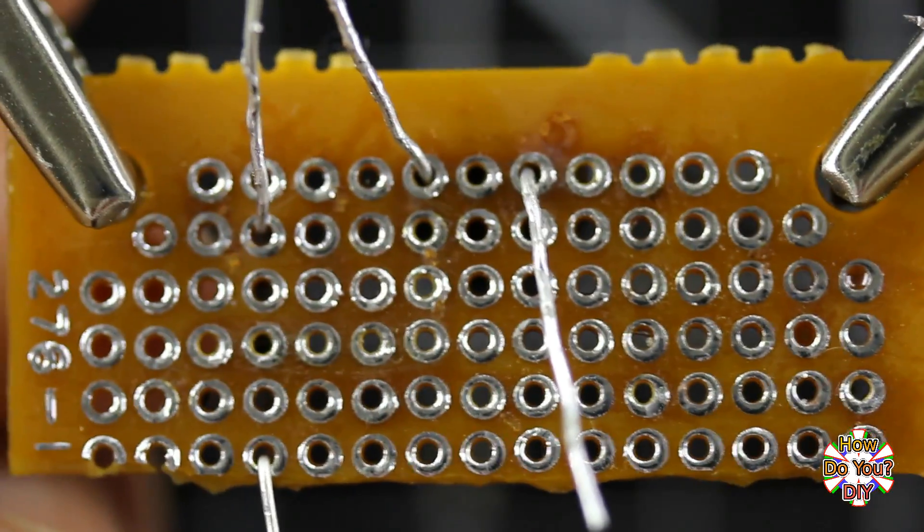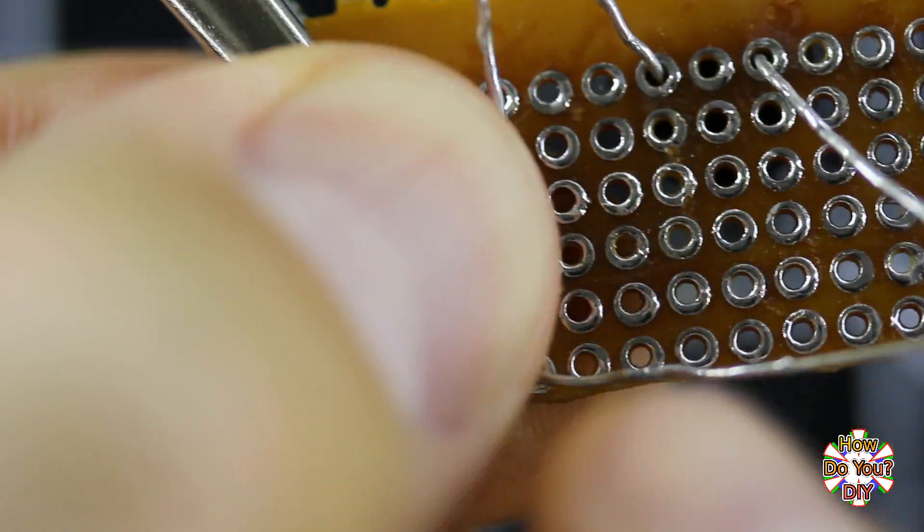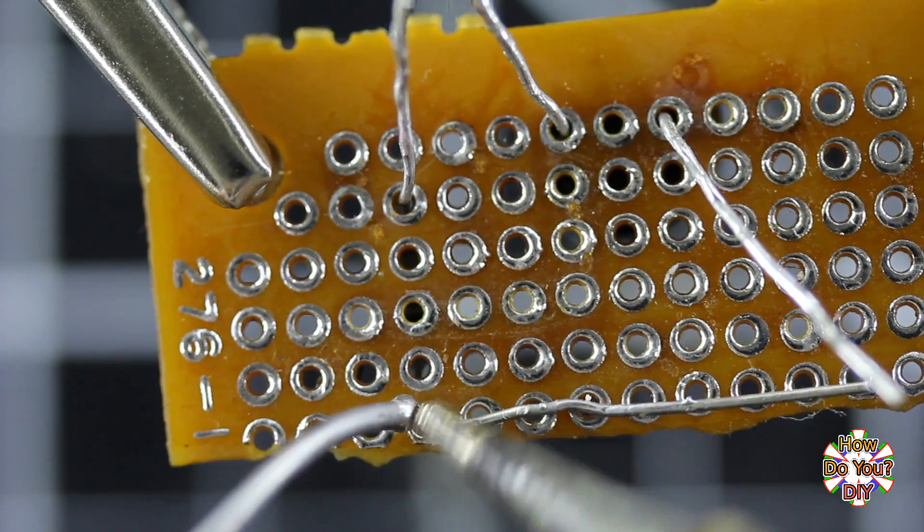When you are ready to solder the parts together, there are a few ways to connect the leads of the different parts together. One way is to bend the leads to follow the path that you want them to have. Add a bit of solder to both the ends of that lead to hold it in place.